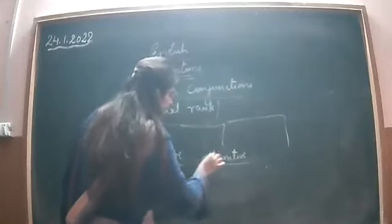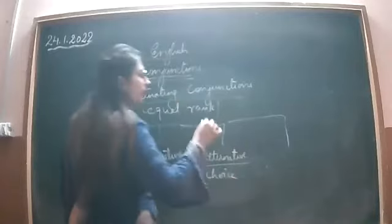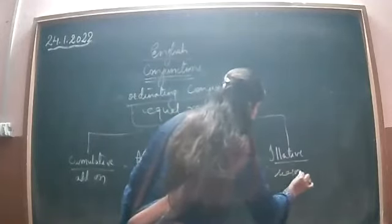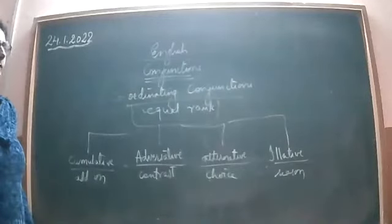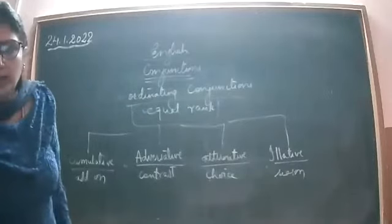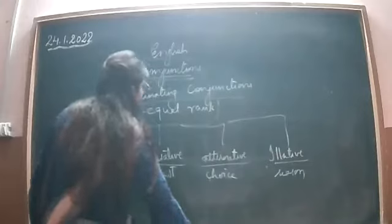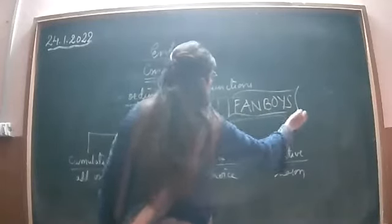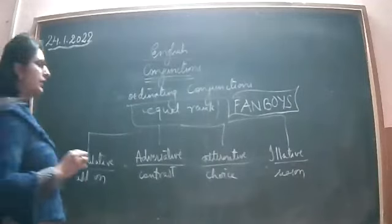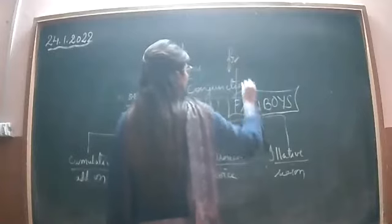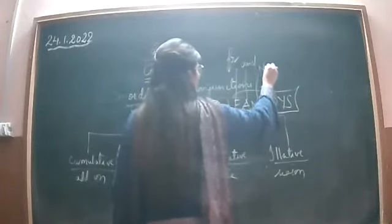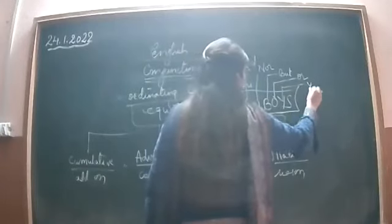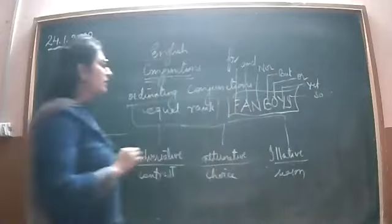Alternative conjunctions give us a choice — for example, 'either/or' and 'neither/nor.' Then we have illative conjunctions, which give a reason or purpose for why something is being done. One simple way to remember coordinating conjunctions is the FANBOYS mnemonic: F for 'for,' A for 'and,' N for 'nor,' B for 'but,' O for 'or,' Y for 'yet,' S for 'so.'